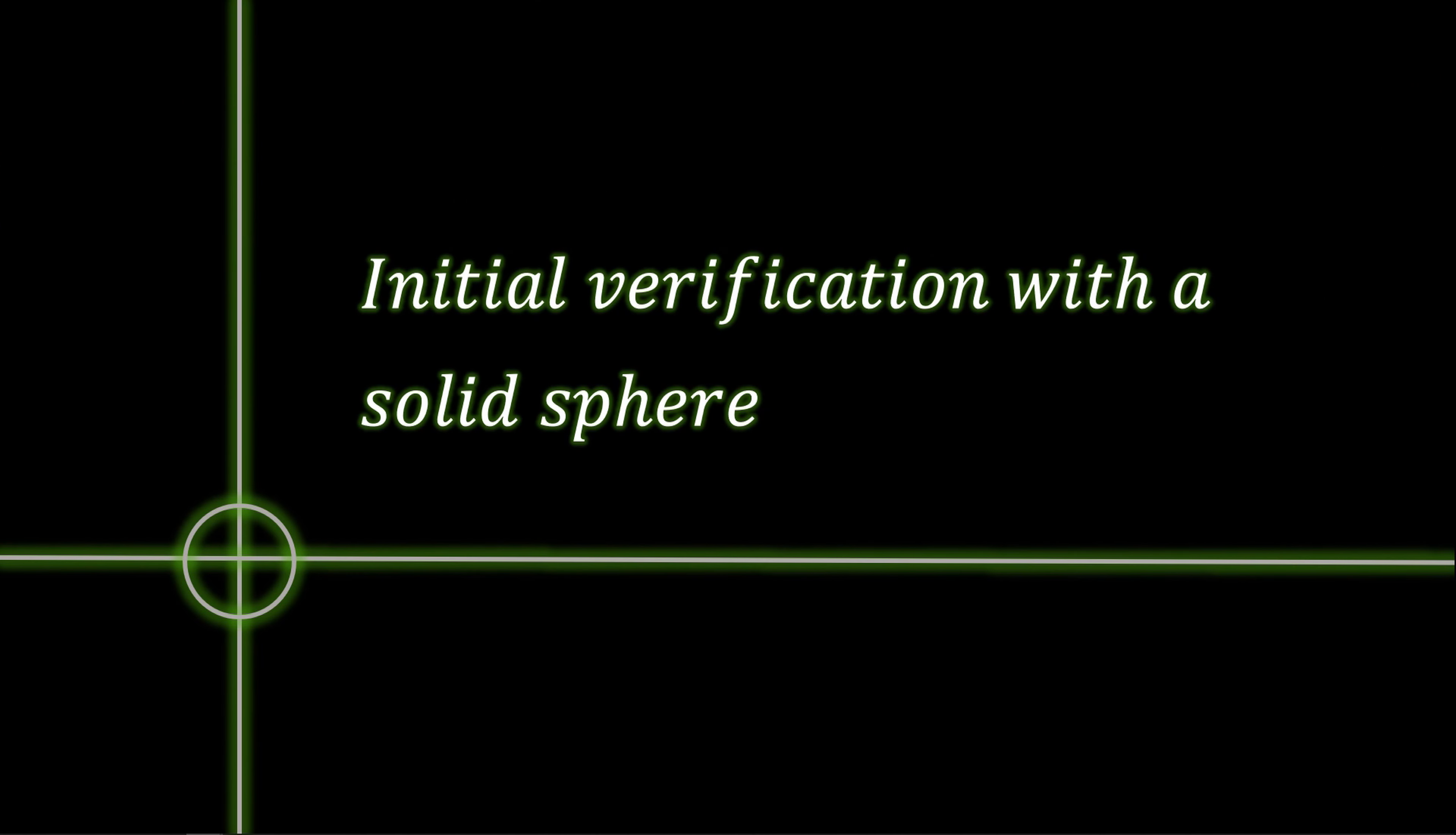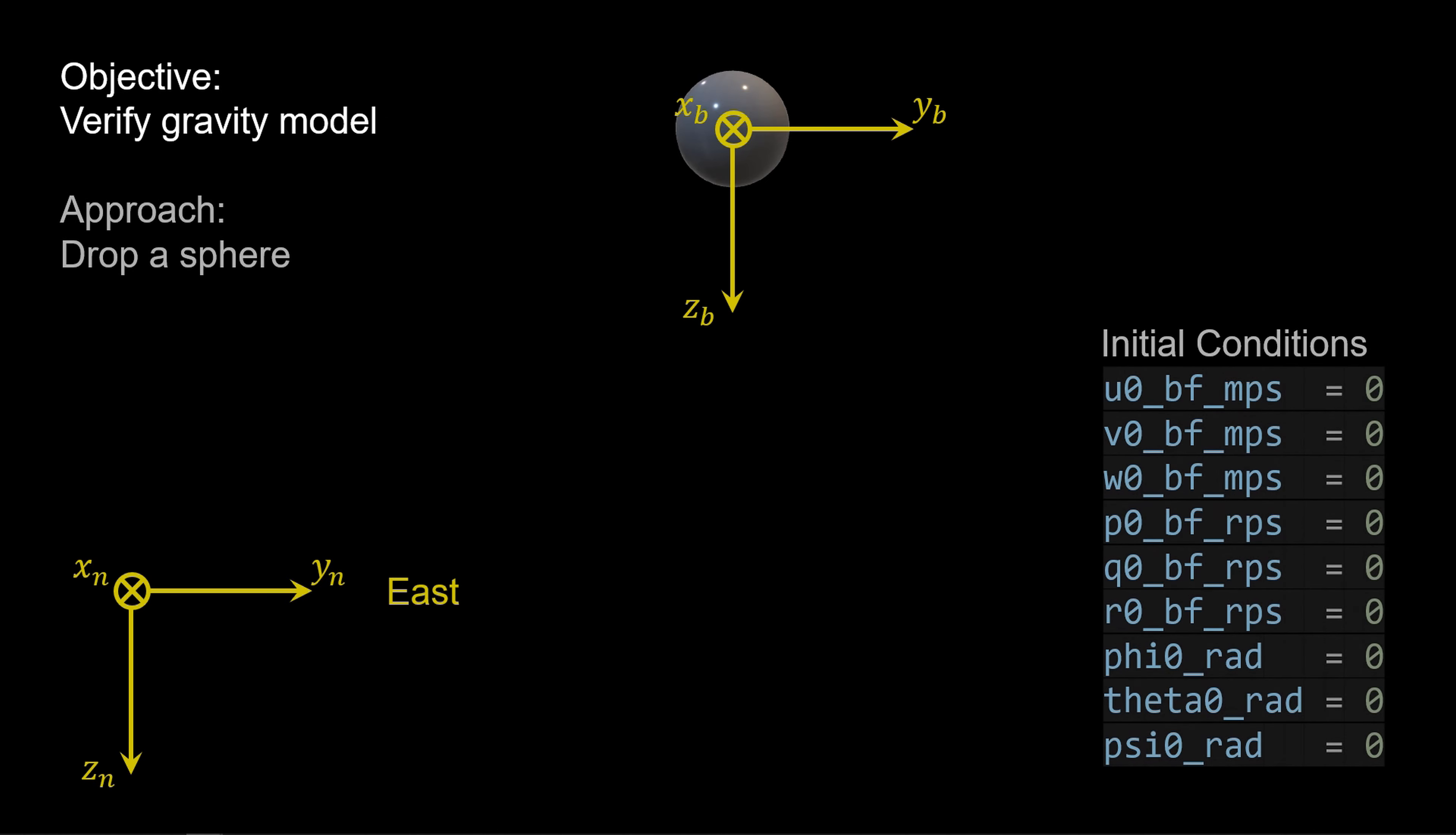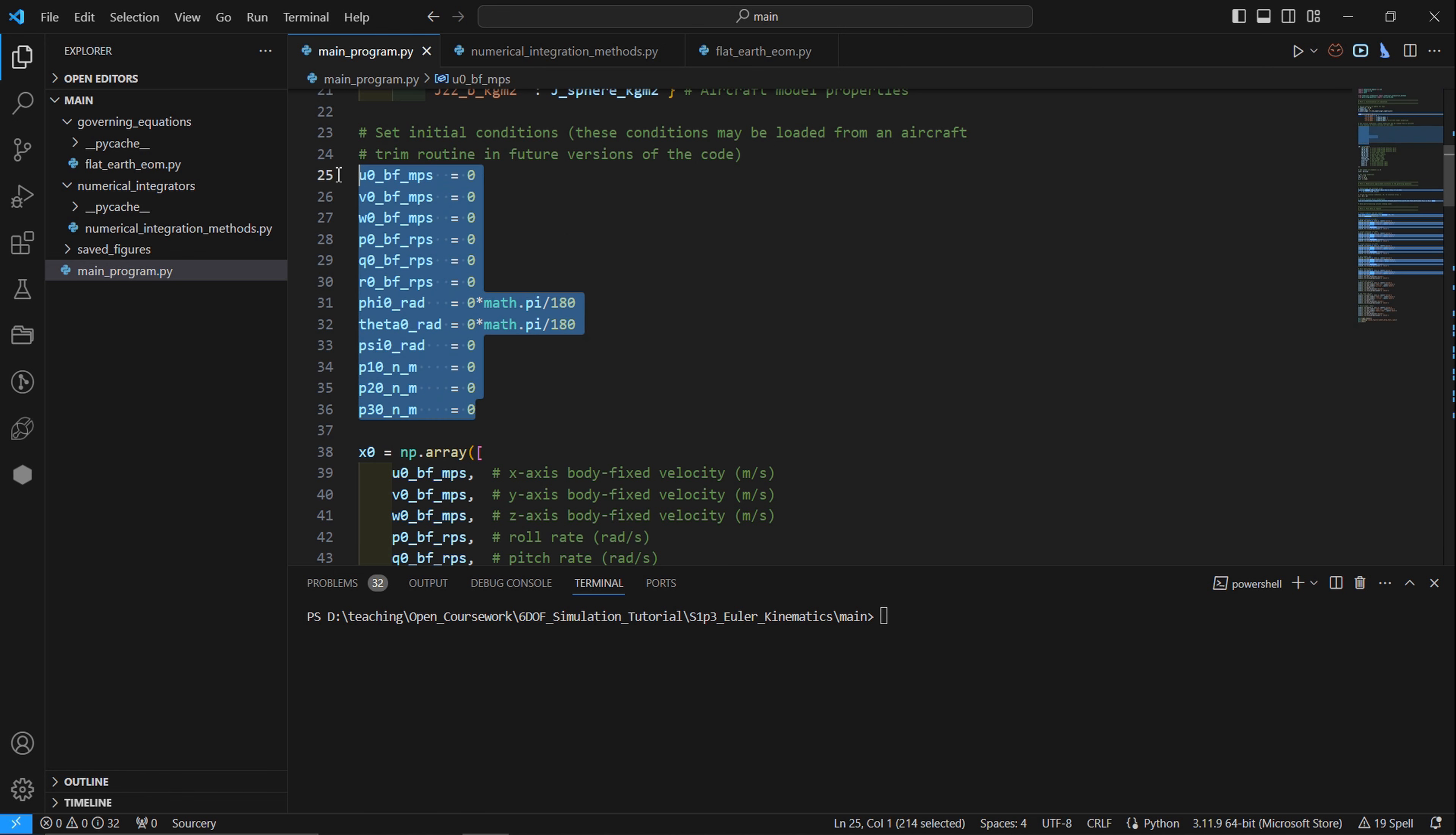Now that we have everything together, let's do a few runs for the sphere and make sure things are working correctly. Let's first verify our gravity model's working. To do this, we'll drop a sphere by setting the initial conditions to zero and letting the sphere accelerate under gravity. Recall, there is no atmospheric model and no aerodynamic model. So the sphere will simply continue to accelerate according to the Earth gravitational constant.